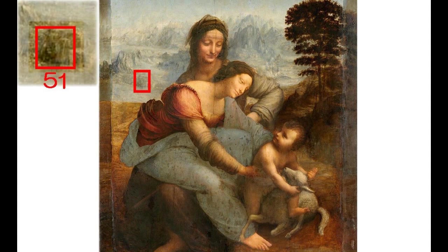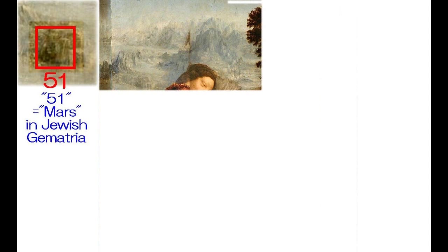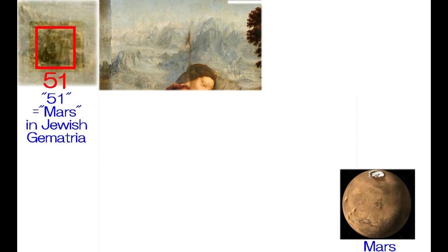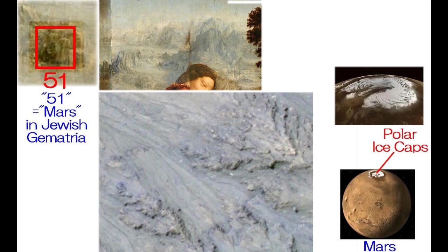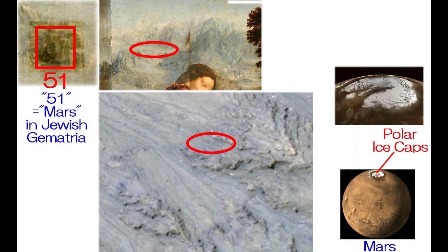You can see a panoramic view of Mars in the background of Mona Lisa and Young Mona Lisa, also known as Isleworth Mona Lisa. And in the background of St. Anne and Holy Families, you can also see a panoramic view of the polar ice caps of Mars. Just compare them with each other — now you know Leonardo painted a panoramic view of Mars in his paintings.